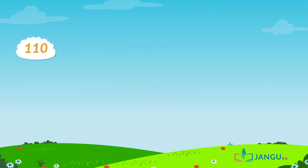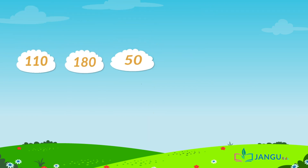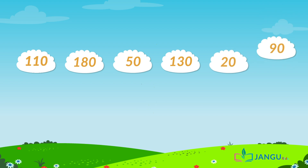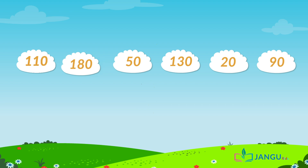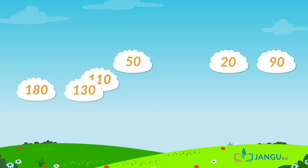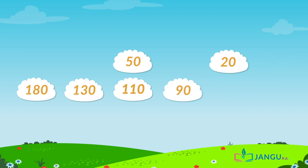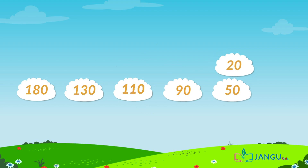Kids, can you help arrange the numbers from biggest to smallest? The biggest number in this sequence is 180, followed by 130 and 110. 90 comes next, followed by 50, and the smallest is 20. Good job!